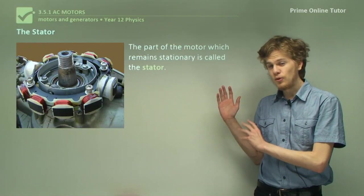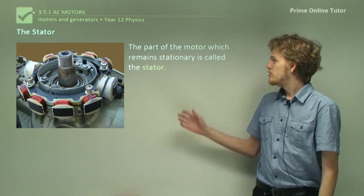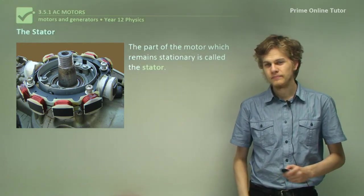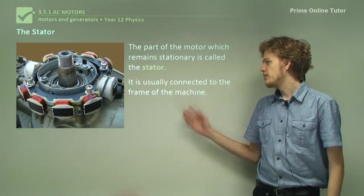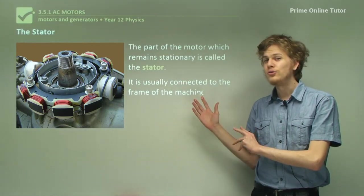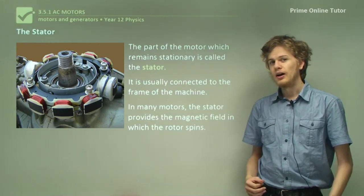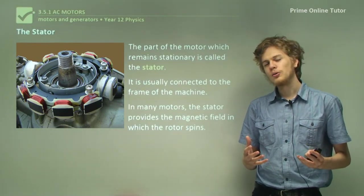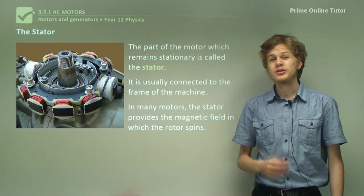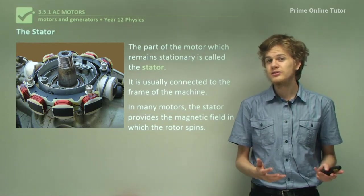As well as a rotor, all motors need a stator. The stator is what remains stationary while the rotor spins. It's usually connected to the frame of the machine, which makes sense because usually we don't want the frame to be rotating. In many motors the stator will provide the magnetic field. That's why we often call the magnetic field across a motor the stator field because it doesn't change. You're familiar with this because we've covered it in DC motors.